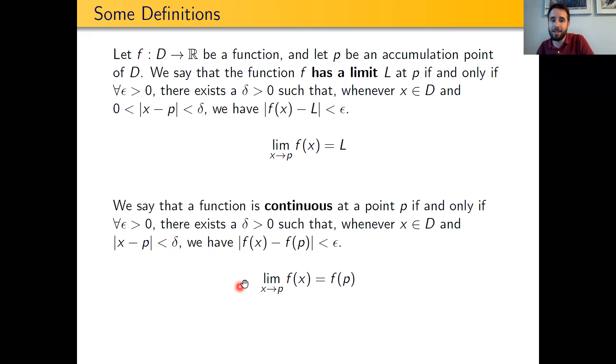So a function is continuous at a point P if and only if the limit as X goes to P of F of X is actually equal to F of P.